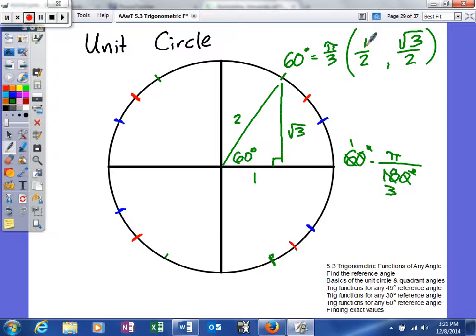We can also have a 60 degree reference angle in our second quadrant. So if that's the case, it would look something like this. Our actual angle is how far we would rotate. So, we would rotate 120 degrees.